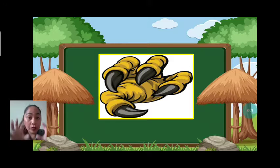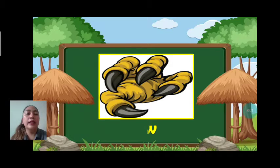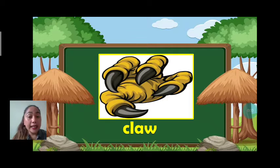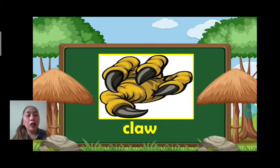Next, we have claw. Let's spell: C-L-A-W. Claw. What part of the bird is it? Claw. Very good.